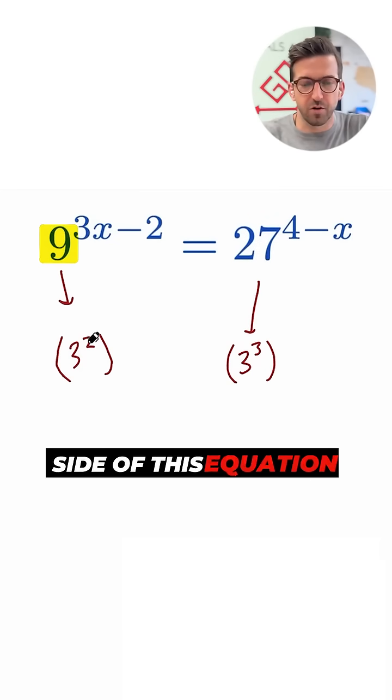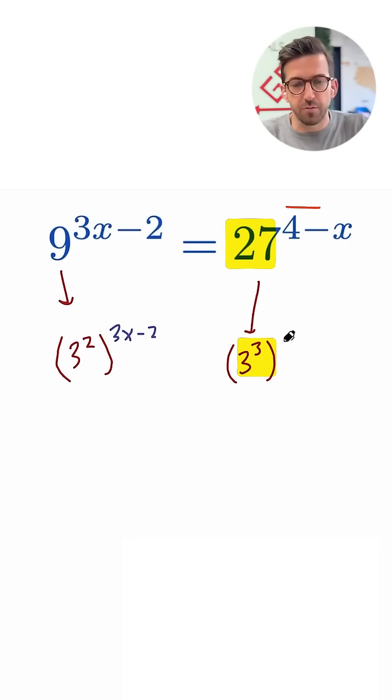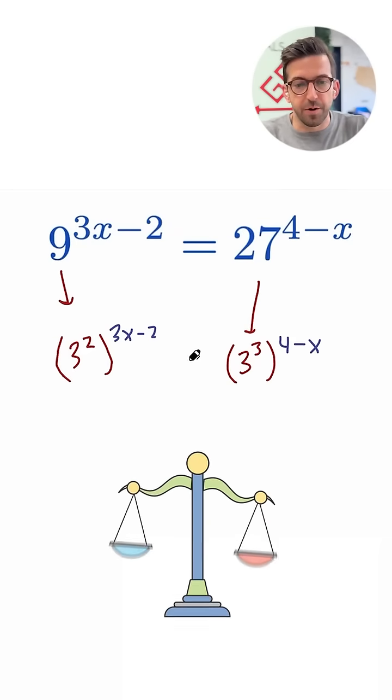So that means the left side of this equation could really be written as 3 squared to the 3x minus 2 power, and the right side of this equation could be written as 3 cubed to the 4 minus x power, and those two must be equal.